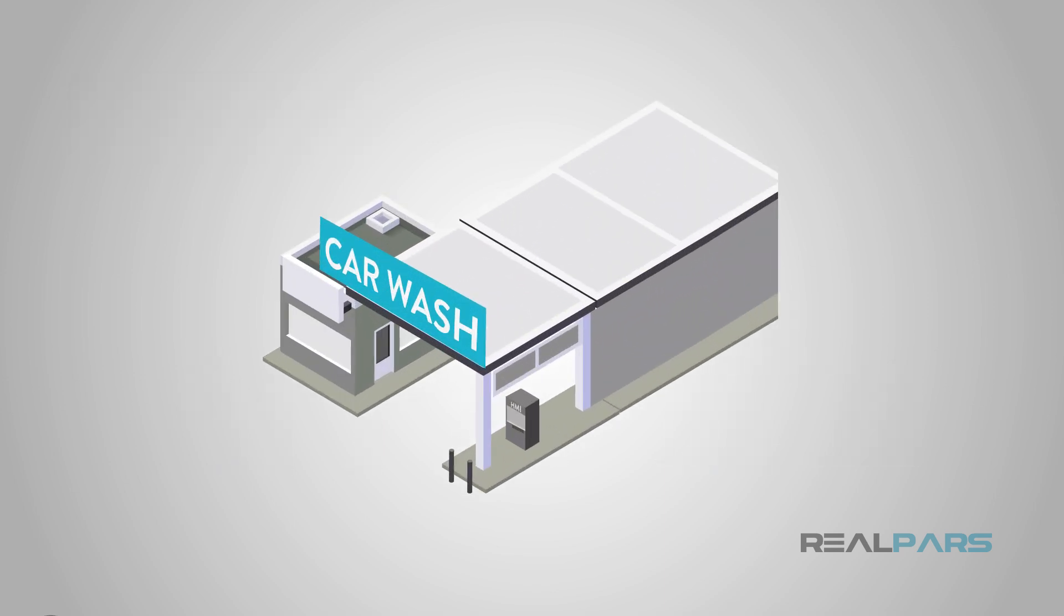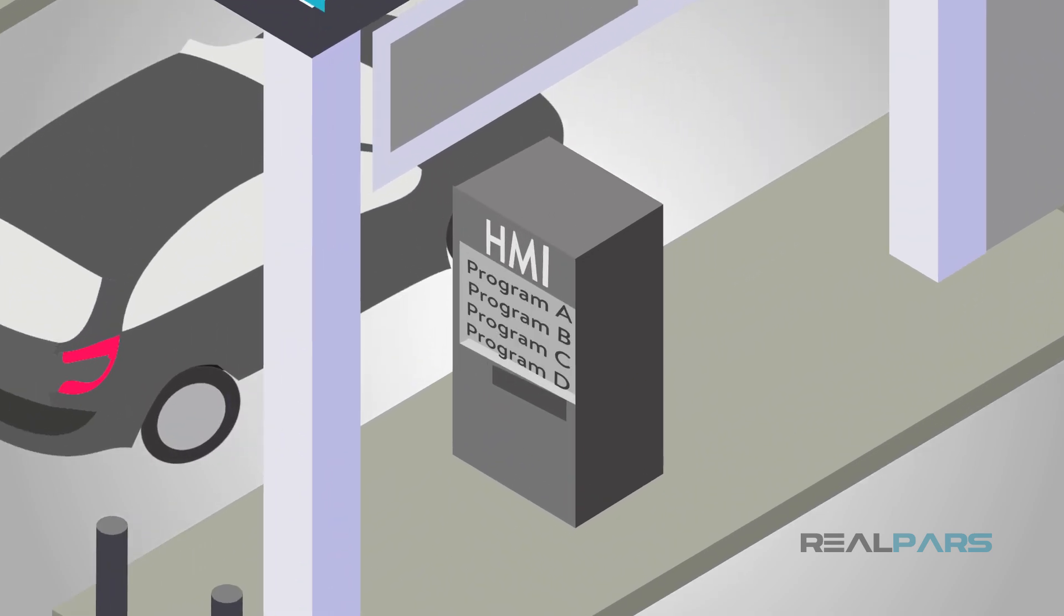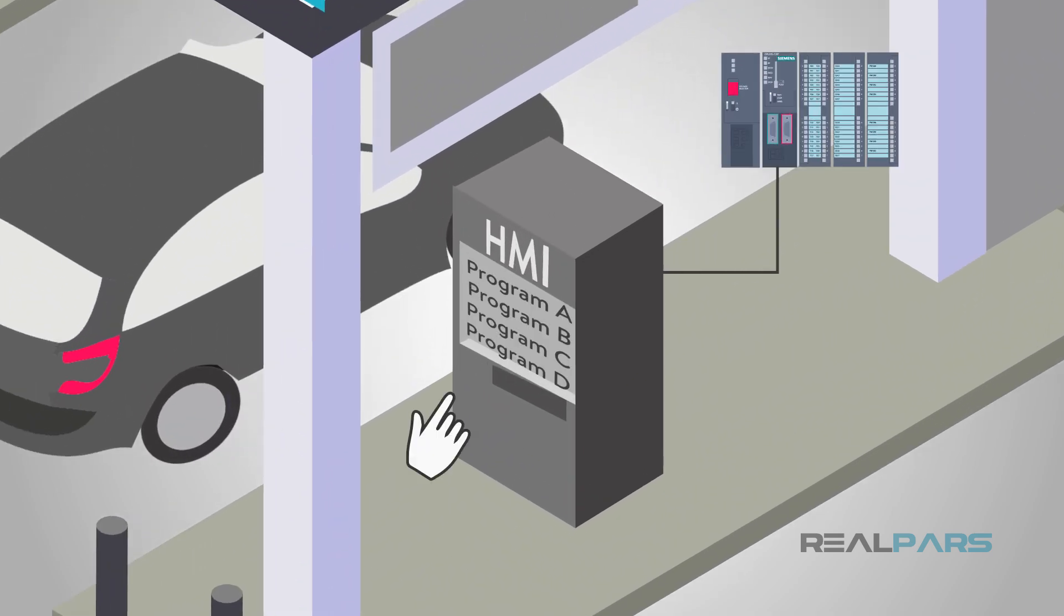A simple everyday example of automation would be an ordinary pull-in and park automatic car wash. If we break it down step by step, it should help you understand how automation works. Once you select your wash, that input will run a certain program on the controller.